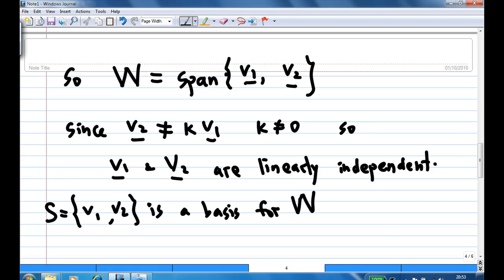As there are two vectors in the basis of W, therefore, the dimension of W is 2. Since there are two vectors in the basis of W, that is the end of the recording. Thanks.